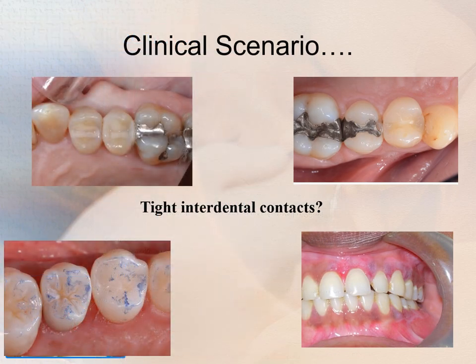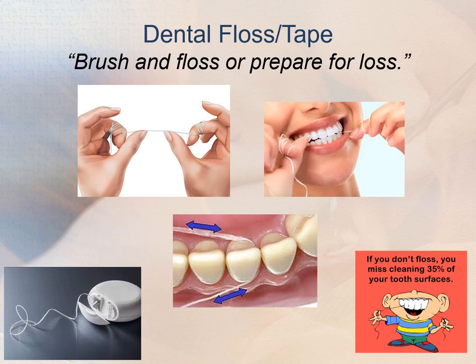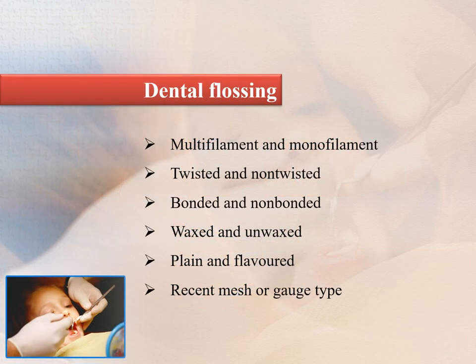For tight interdental contacts, dental floss is the most widely recommended tool — it removes plaque from the proximal tooth surfaces. Recommendation about type of floss should be based on ease of use and personal preference. Dental flosses are available as multifilament and monofilament, twisted and non-twisted, bonded and non-bonded, waxed and unwaxed, plain and flavored, and recent mesh or gauge types.